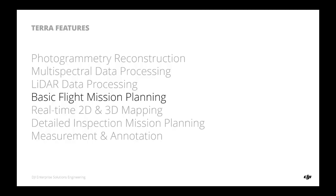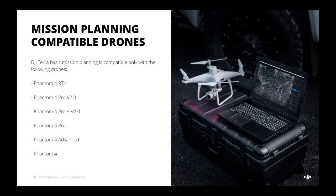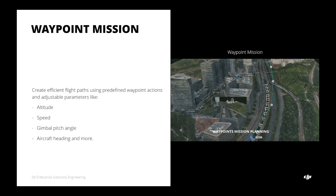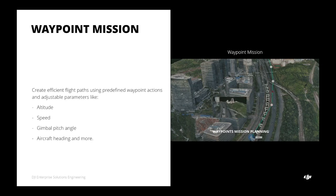Next we have basic flight mission planning. DJI Terra supports mission planning for the Phantom 4 RTK, Phantom 4 Pro V2, Phantom 4 Pro Plus V2, Phantom 4 Pro, Phantom 4 Advanced, and Phantom 4. The first mission type is waypoint mission. Users can create a waypoint mission within DJI Terra by connecting the remote controller to the computer, then create and execute a mission — easily adjusting altitude, speed, gimbal pitch angle, aircraft heading, and camera settings.